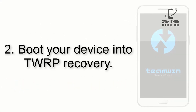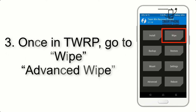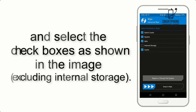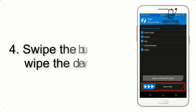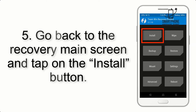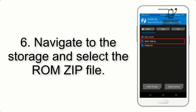Step 2: Boot your device into TWRP recovery. Once in TWRP, tap on Wipe, then Advanced Wipe, and select the checkboxes as shown in the image, excluding internal storage. Step 4: Swipe the button to wipe the device. Step 5: Go back to the recovery main screen and tap on the Install button.